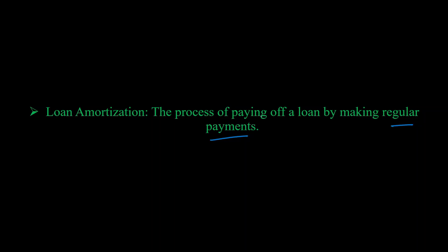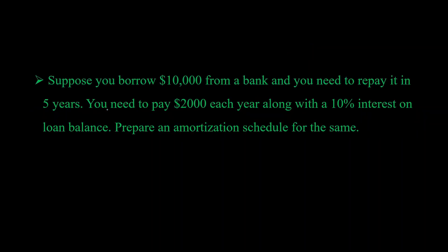There are various ways you can pay off a loan, but one common way is that you pay an equal amount of money every period. If you're borrowing some amount of money which you have to repay in, say, five years, you pay the same amount every year such that the full amount along with interest is paid back to the lender in five years. In this video, we'll discuss the type of loan where a borrower pays a fixed amount of money every period along with some interest. We're supposing you're borrowing ten thousand dollars from a bank, repaid in five years, writing off two thousand dollars each year, with a ten percent interest on your loan balance.